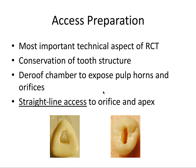Part of the access prep is to de-roof the chamber to expose pulp horns and orifices. A key concept is to attain straight-line access to the orifice and apex — that is, attaining as straight as possible a path for an endodontic file through the access opening to the canal orifice, and all the way to the apical endpoint, which is called the apex.